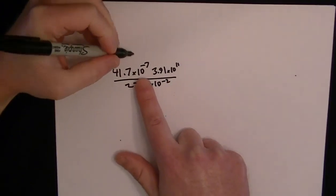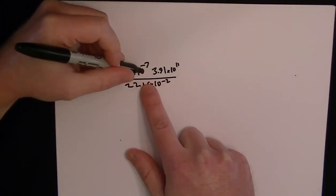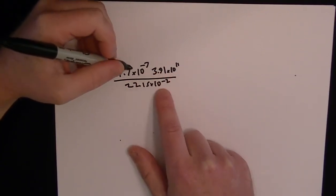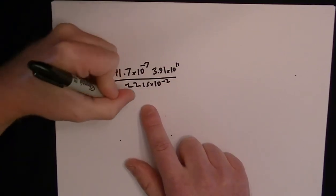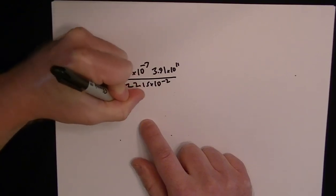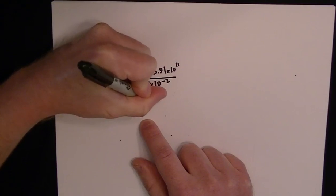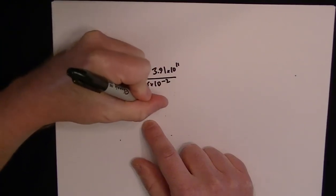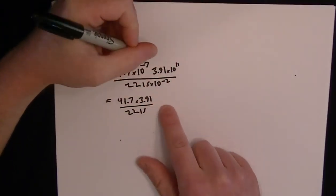So first, we've got all these powers of 10. Because they're the same base exponent, which means they're all 10 to the power something, we can work to simplify them. So let's write down our expression here without the tens: 41.7 times 3.91 divided by 22.15. And now let's work with the tens on the rest of the expression.